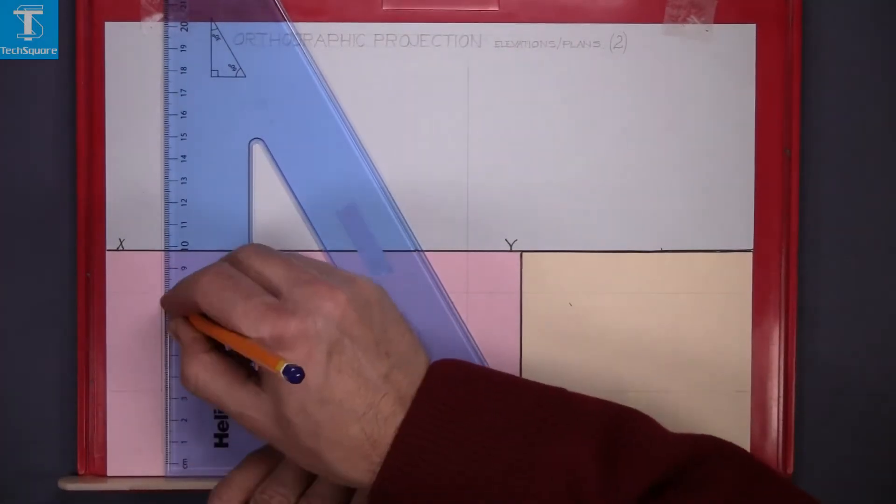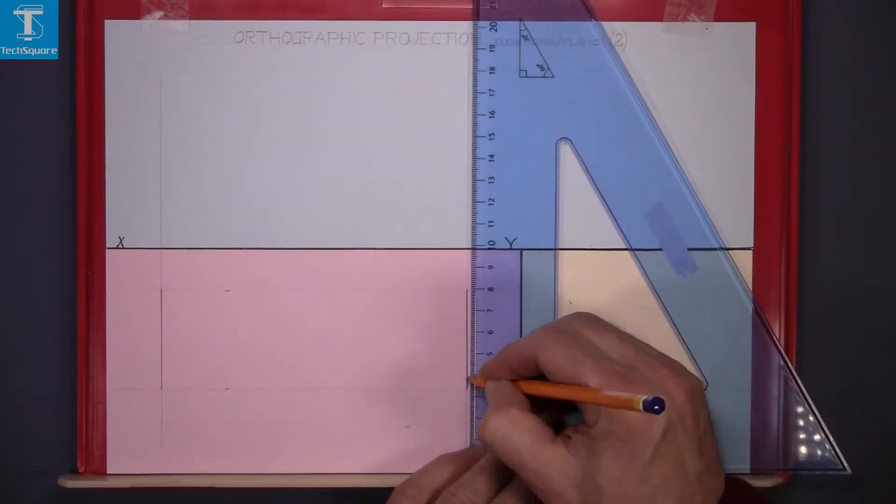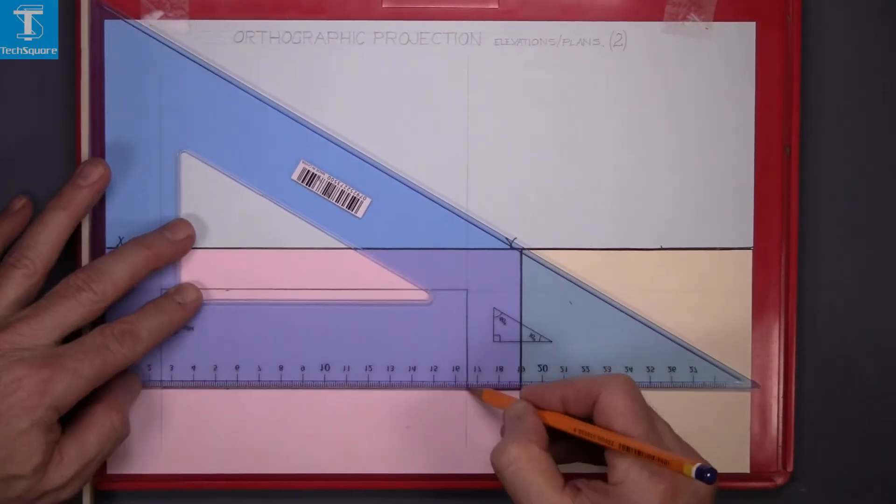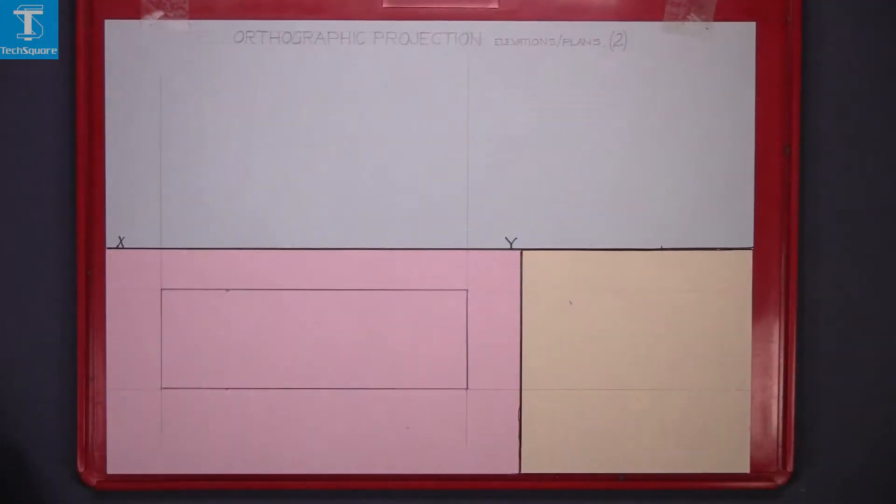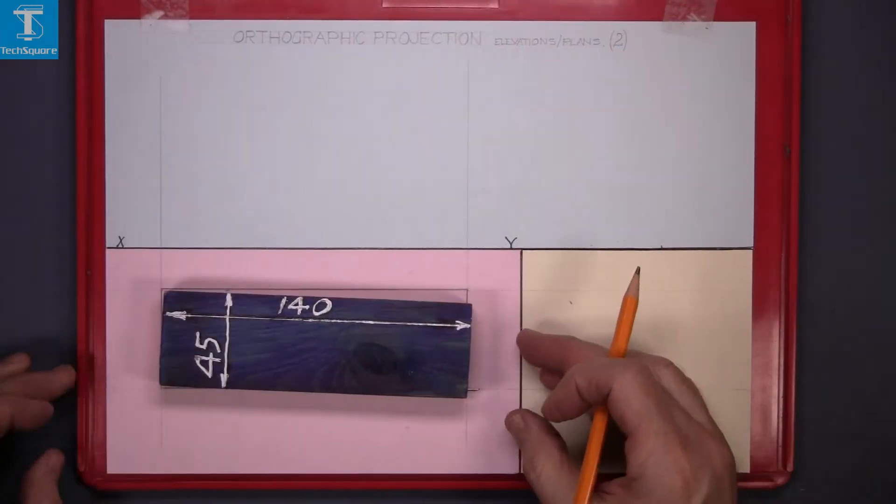Now we line in the plan. So draw the two vertical lines in heavy and then the two horizontal lines. That's the plan complete.